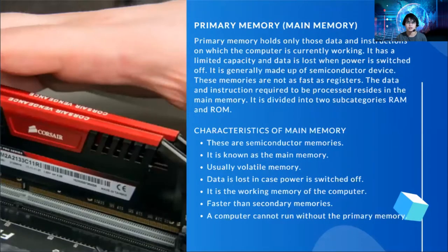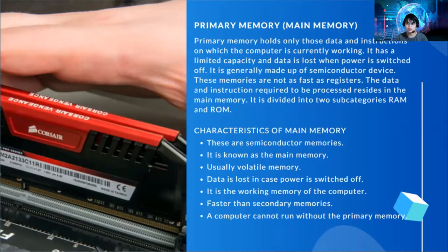Next, we have primary memories, which are the main memory of a computer. Primary memory holds only those data and instructions on which the computer is currently working. It has a limited capacity and data is lost when power is switched off. It is generally made of semiconductor devices which are not as fast as registers. The data and instructions required to be processed reside in main memory. The main memory is divided into subcategories: random access memory or RAM, and read-only memory or ROM.